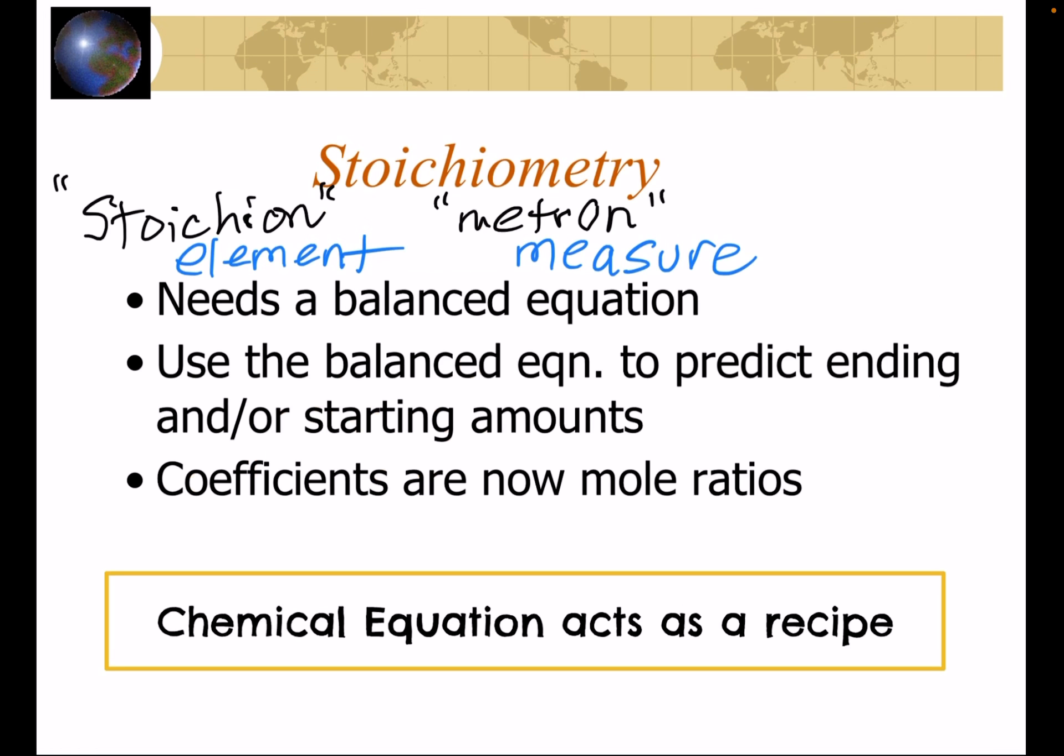So stoichiometry is a fancy word, but really stoichion means element and metron means measure, so it has to do with measuring the elements in a balanced equation. The equation must always be balanced to do this, but once you have a balanced equation you can use the coefficients in the equation as something called a mole ratio and it will be acting as a recipe for your calculations.